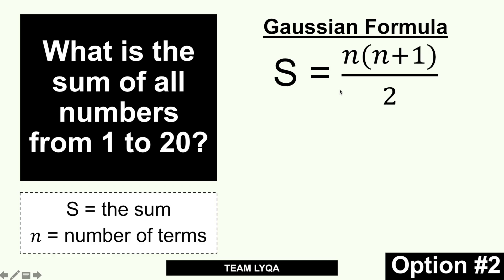Here's the formula: S = N(N+1) / 2. S is the sum — what we're looking for. N is the number of terms, meaning how many numbers there are. From 1 to 20, that would be 1, 2, 3, 4, 5, 6, 7, 8, 9, 10, 11, 12, 13, 14, 15, 16, 17, 18, 19, 20 — 20 terms.